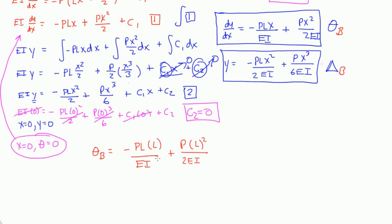Okay, and if I simplified this down a bit, I get negative PL squared over EI plus PL squared over 2EI. And if I combine these two terms together, I should get negative PL squared over 2EI. So this is our slope at B.